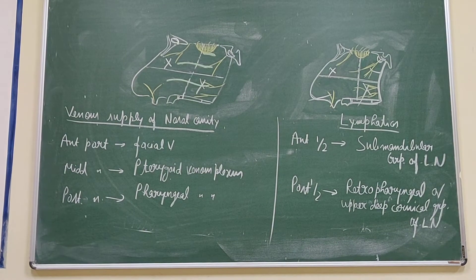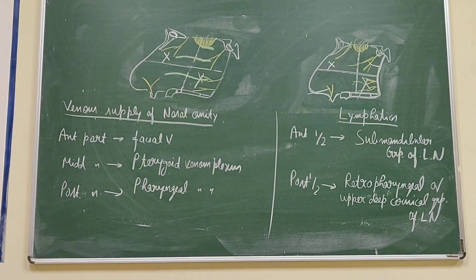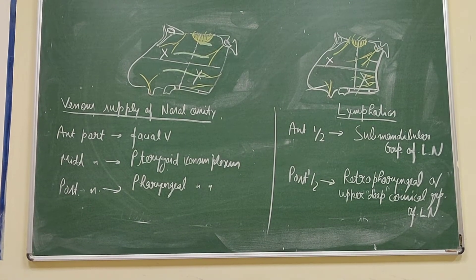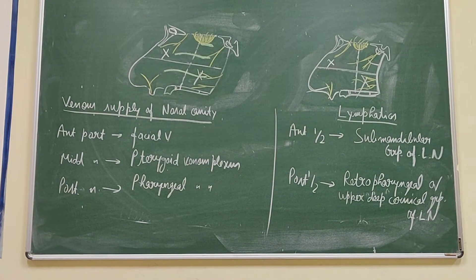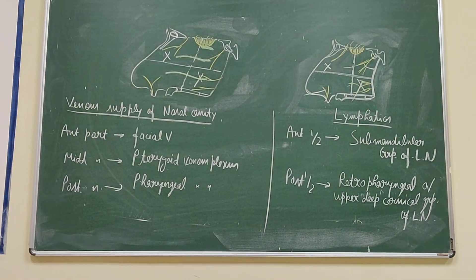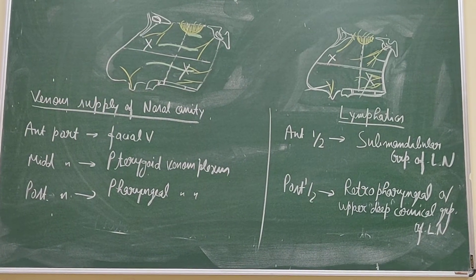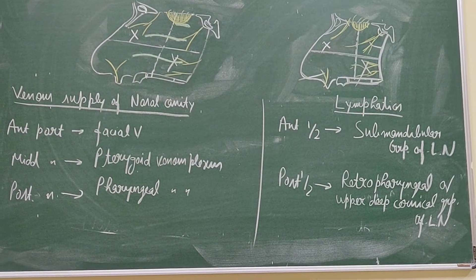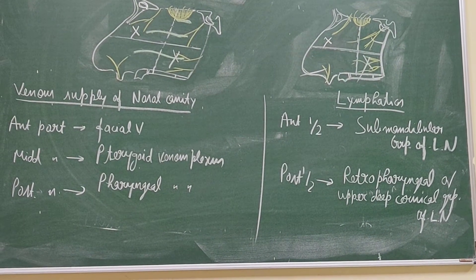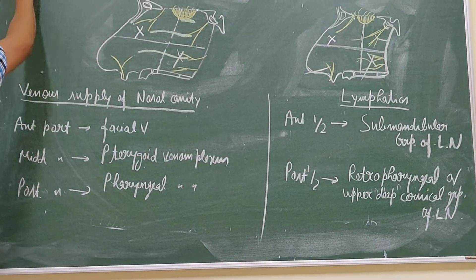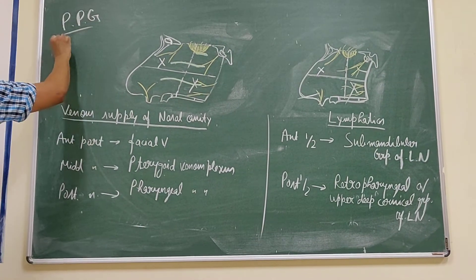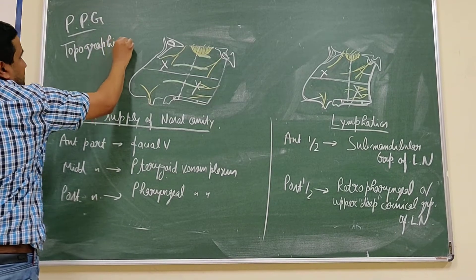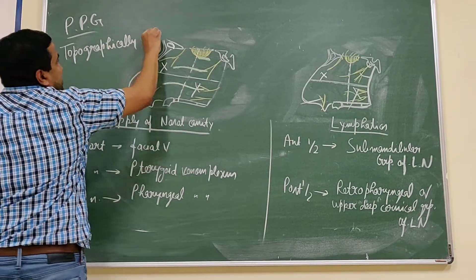After special and general sensation, there is also the secretomotor pathway. Mucosal glands are present in the nasal cavity, and this secretomotor pathway — the postganglionic fibers — comes from the pterygopalatine ganglion. This pterygopalatine ganglion is topographically related to the maxillary nerve.